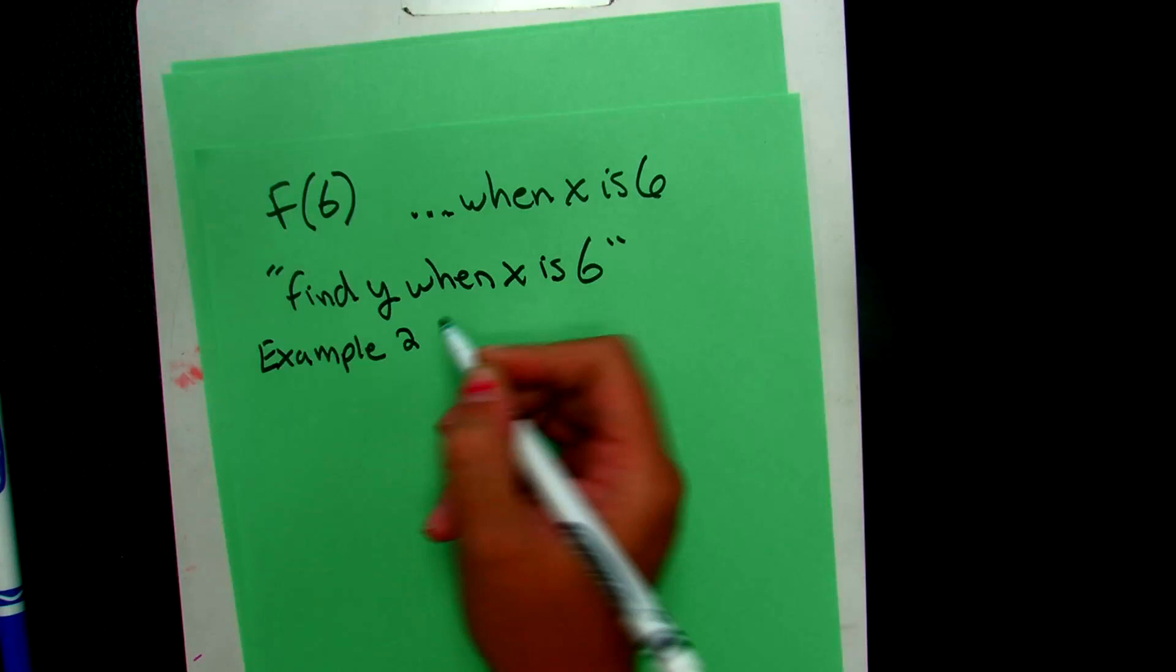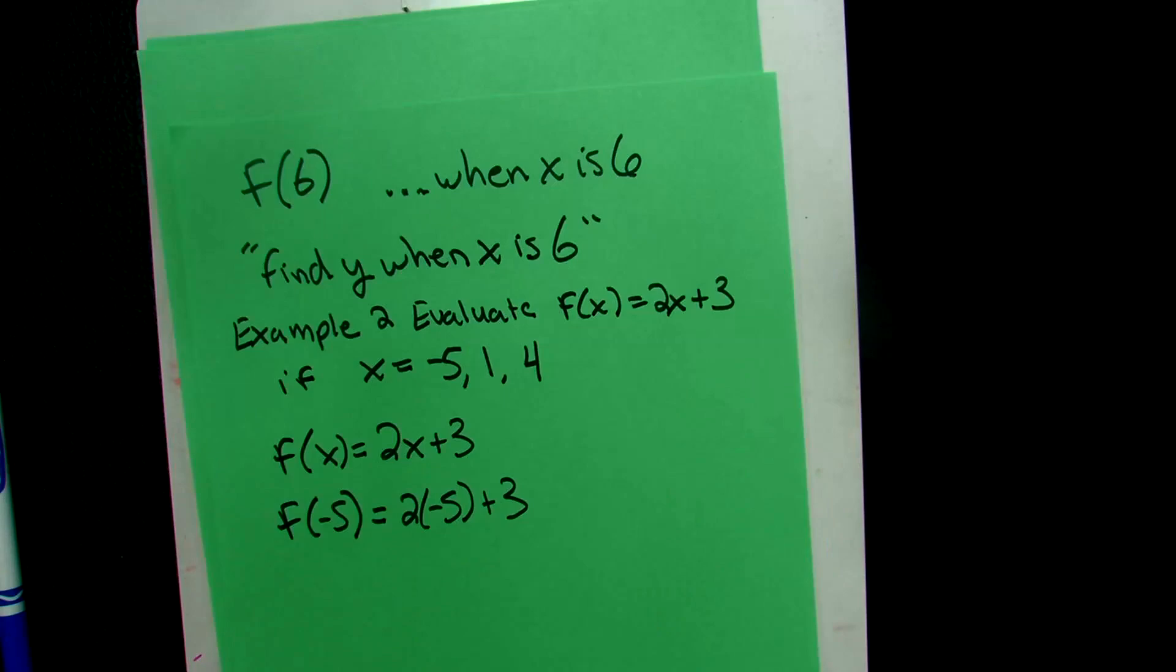Let's look at example 2. Where we need to evaluate F(x) = 2x + 3 if x equals -5, 1, and 4. So we're going to start with negative 5. So here's our function rule. And we're going to plug in negative 5 for x. And then we'll evaluate 2 times -5 is -10 plus 3 gives us -7.